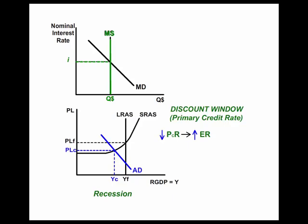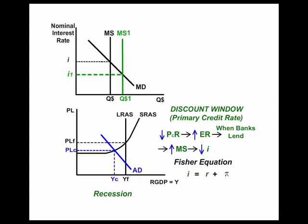If banks borrow through this primary credit rate and their excess reserves go up and banks lend this money, then the money supply is going to increase. As the money supply increases, this will lower the nominal interest rate. People don't borrow because of nominal interest rates, but instead borrow because of real interest rates. According to the Fisher equation,